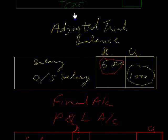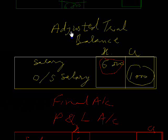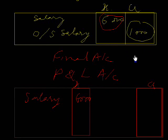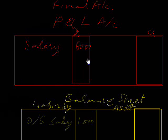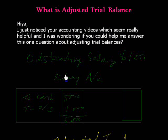Like this, we will make all our adjustments — like advance expenses, outstanding incomes, advance incomes. So all these adjustments will be in the adjusted trial balance, and we need not show their effect again in our profit and loss account or trading account. I think you will understand this. Thank you very much.